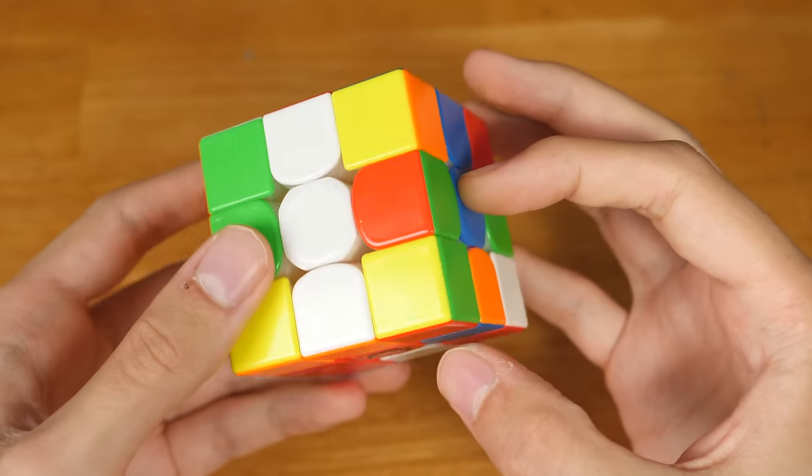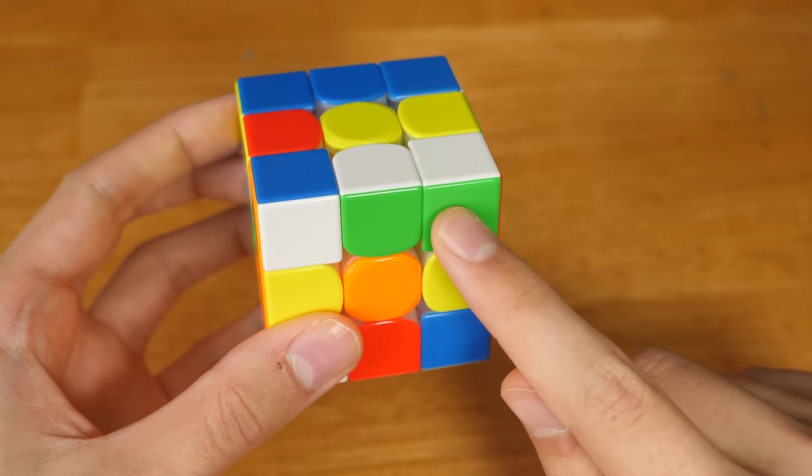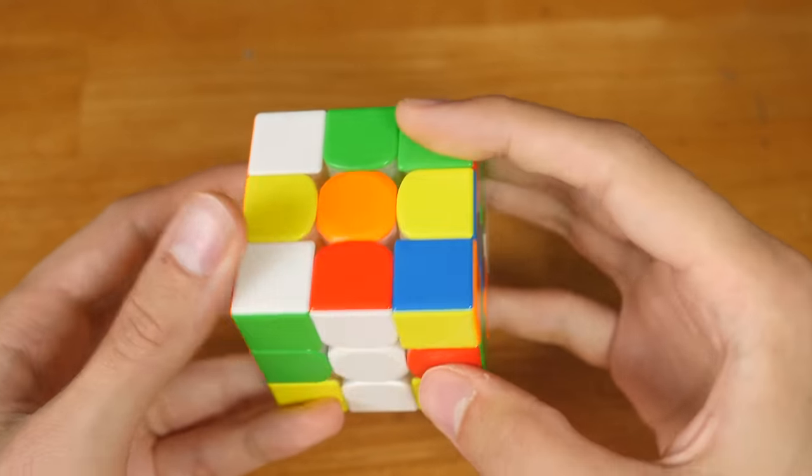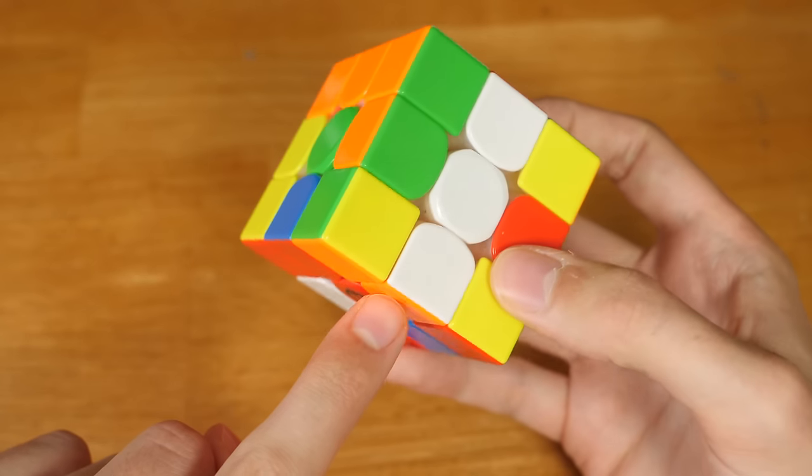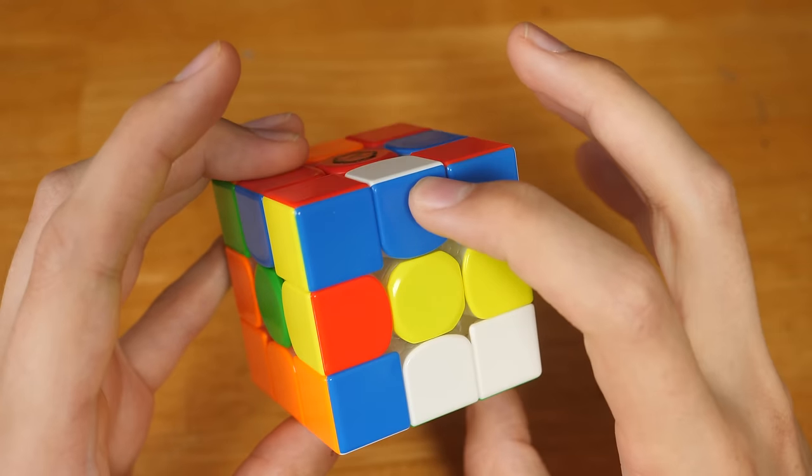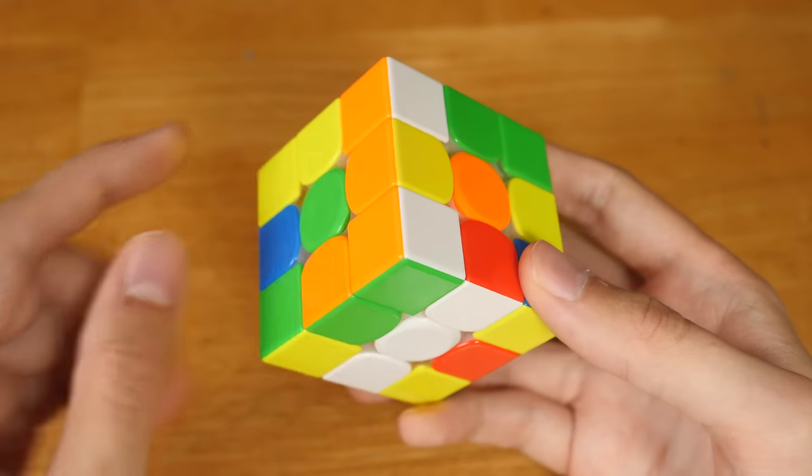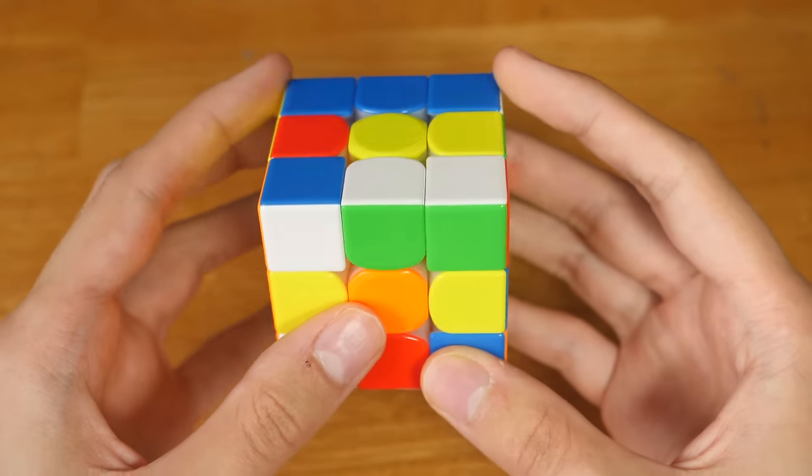This third solve also starts with a white X-cross, making use of this cross edge block, the pair that goes with it, these two relatively solved cross pieces, and the fourth cross edge here. We'll also set up this free pair to be solved second.